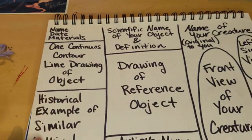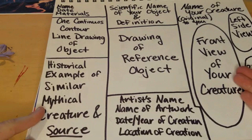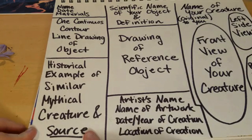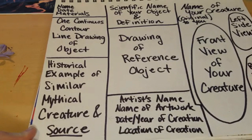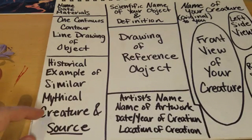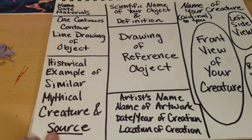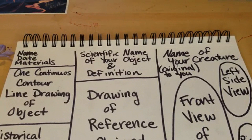Down here we have the historical example of a similar mythical creature and the source. This is very important because it's what we're going to use as inspiration for our final mythical creature drawing. We're not looking for something specific like a sprite if you're going to draw a sprite — we're looking for something that will inspire us with its design, its color scheme, something broad enough that we can take inspiration without stealing or copying it exactly. One of the most important things here, which is why it is underlined, is the source. You need to include the website source and write it down from where you got it — that is extremely important, and you must cite your sources.